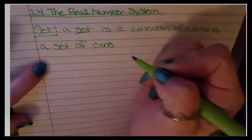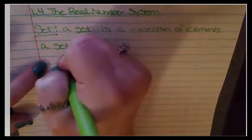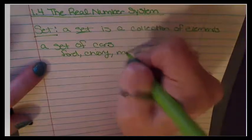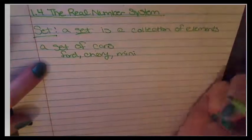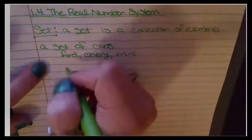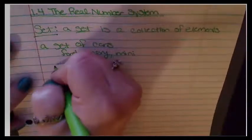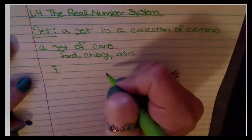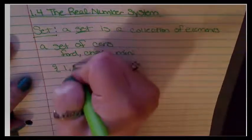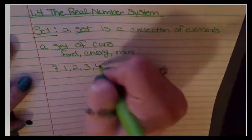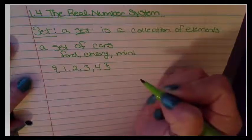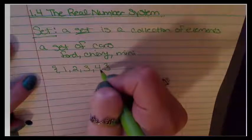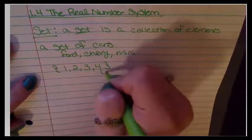When we talk about words and things like that, a lot of times we just list them out like Ford, Chevy, Mini. But with numbers, you're going to use these curly brackets, which I know are hard to make, but you'll get used to them. And then you're going to list your numbers like 1, 2, 3, and 4. And then when you're done with your set, you're going to close your curly brackets.